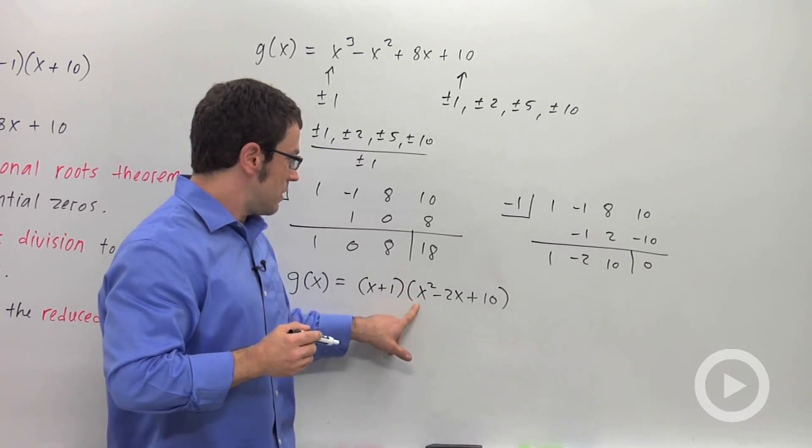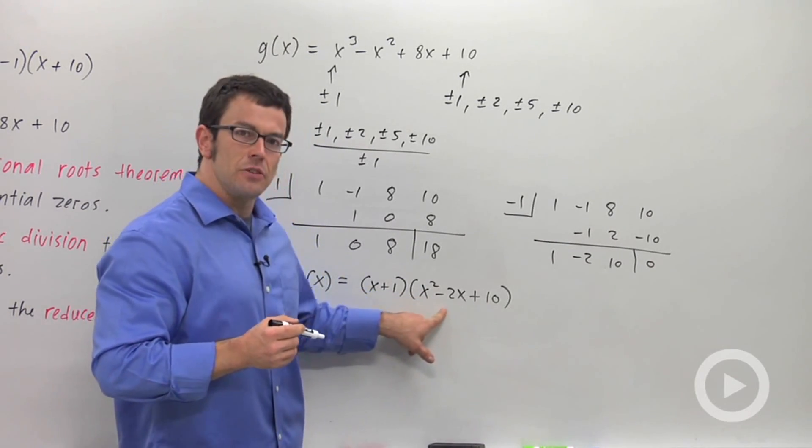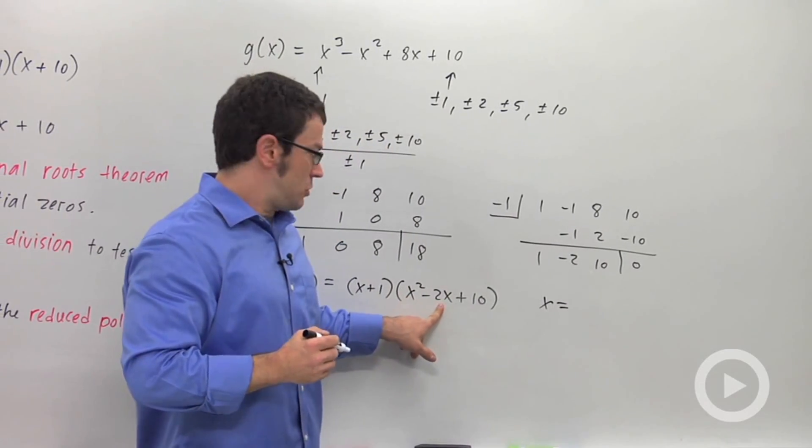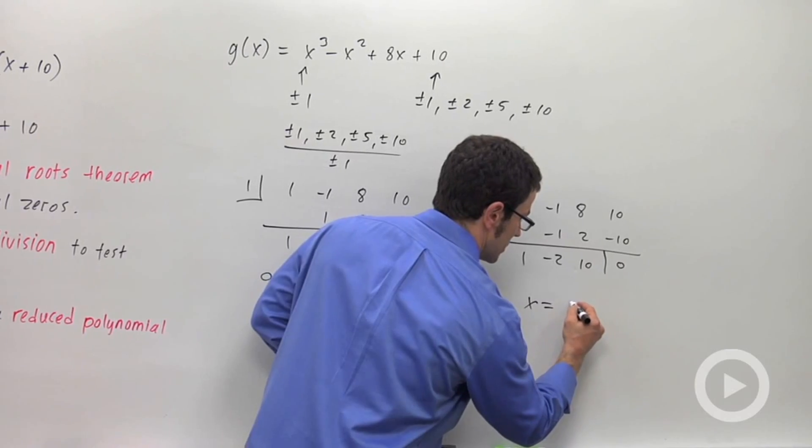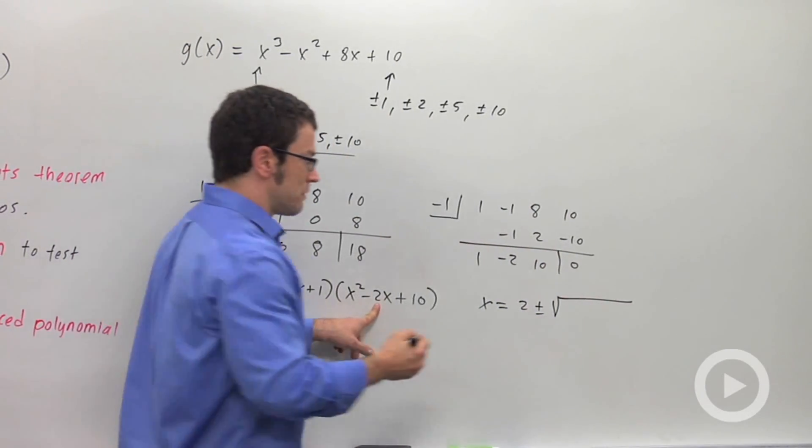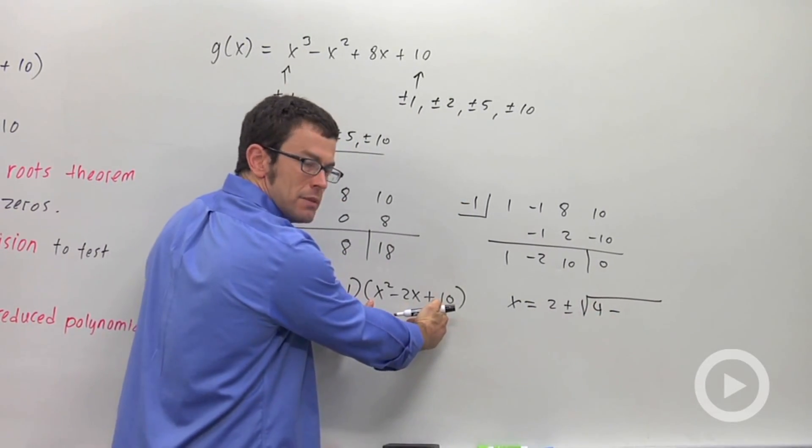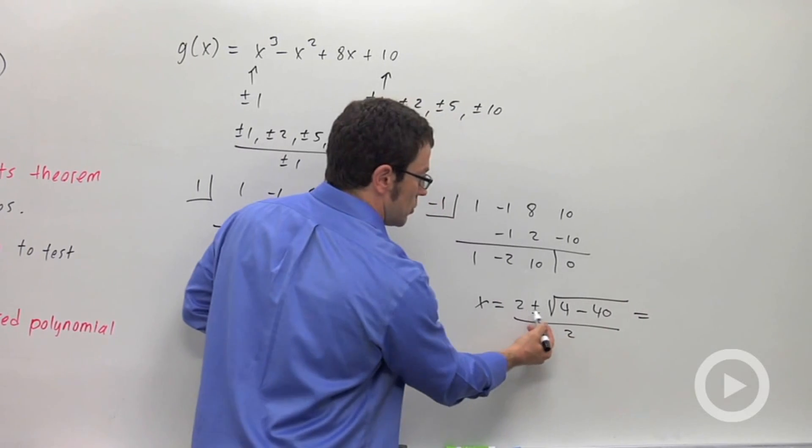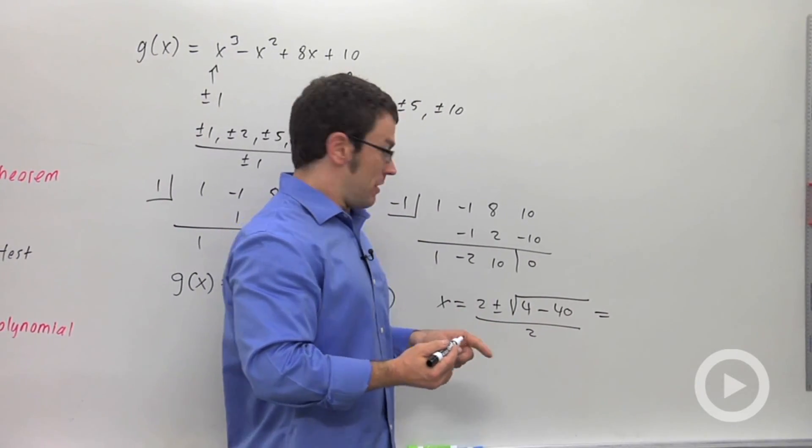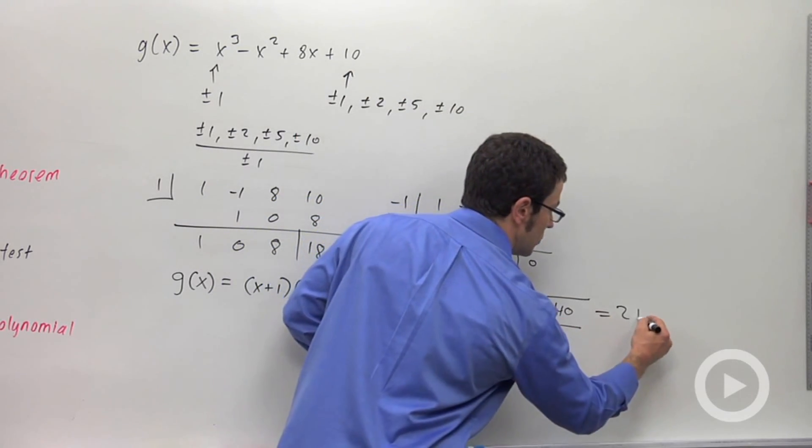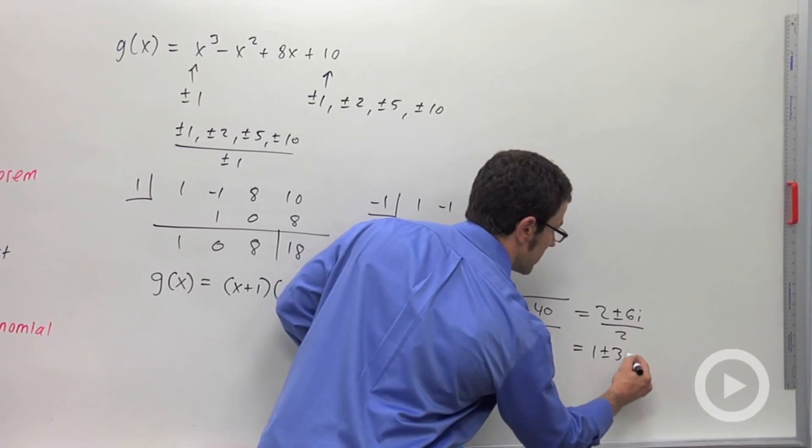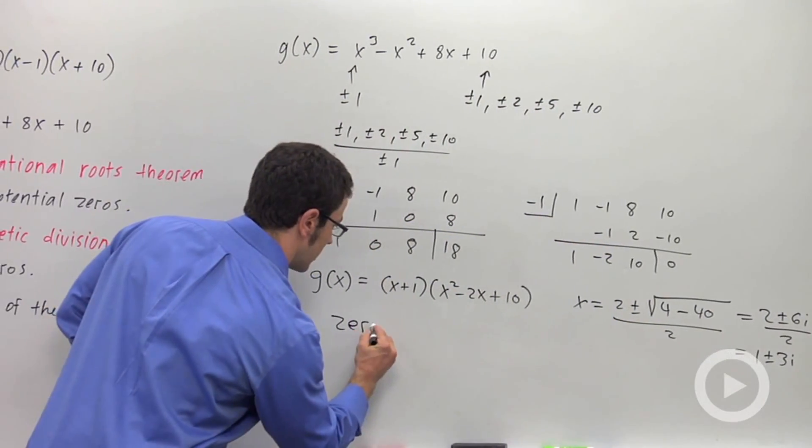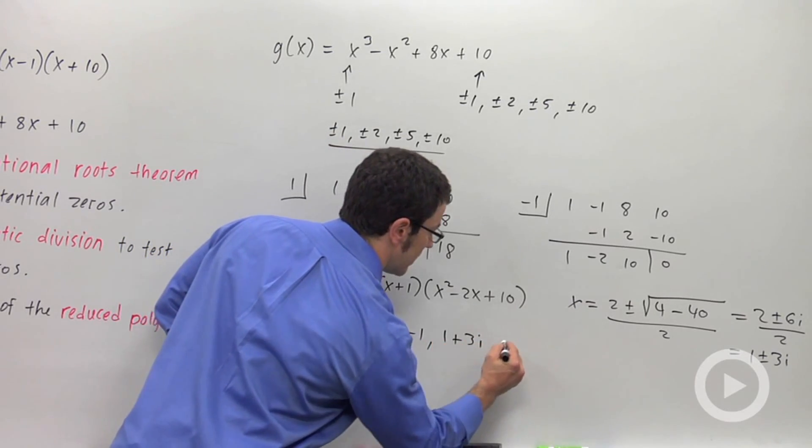Now, if you want to find the remaining zeros of this function, you've got to look here. Right? This one has a zero of negative 1. This has the other two zeros. Now, it's a quadratic, so we can use the quadratic formula. a is 1, b is negative 2, and c is 10. So negative b, which is positive 2, plus or minus b squared, negative 2 squared is 4, minus 4ac, 4 times 1 times 10 is 40, all over 2a, 2. So this is going to give me 2 plus or minus root negative 36. It's imaginary, right? Root negative 36 is 6i. So 2 plus or minus 6i over 2, which is 1 plus or minus 3i. And that represents two zeros, two imaginary zeros for our polynomial. And so the zeros are negative 1, 1 plus 3i, and 1 minus 3i.